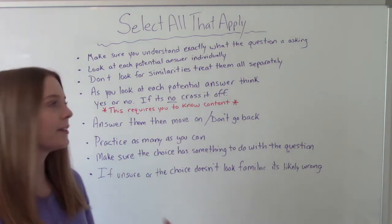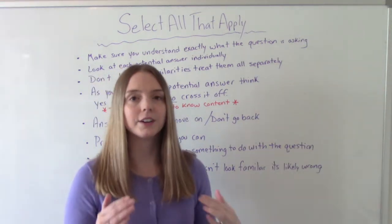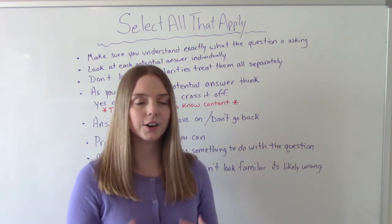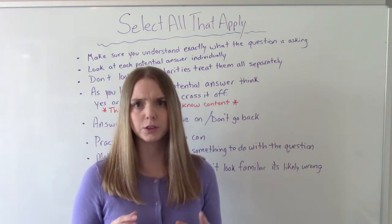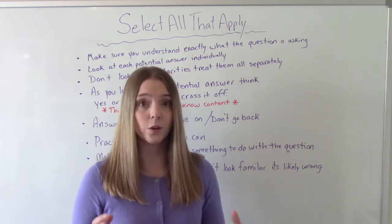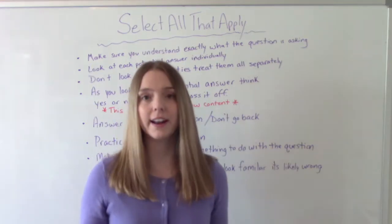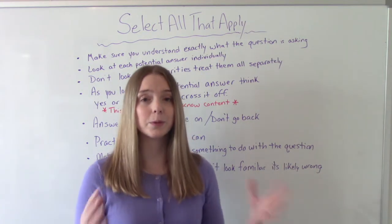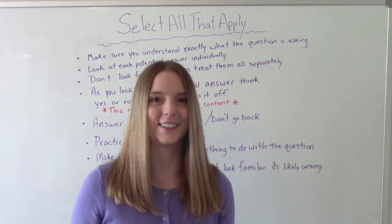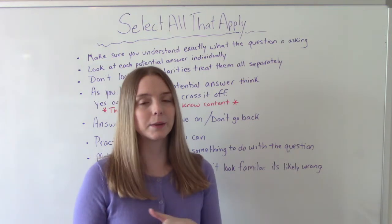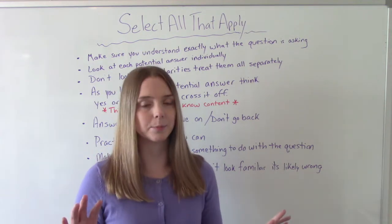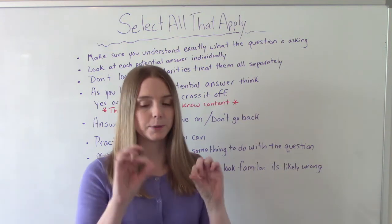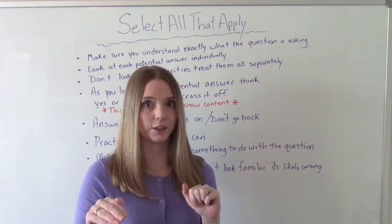So just like you're going to read them all one at a time, you're not going to try to compare them. You're not going to say, oh, well, option A and option D both have something to do with oxygenation, therefore they're related and they must be the right answers. No, do not do that, because they could be related and the wrong answers, right? So just because they have similarities doesn't make them correct, so don't even bother trying to make similarities between each of the potential answers. Treat them as an individual one.